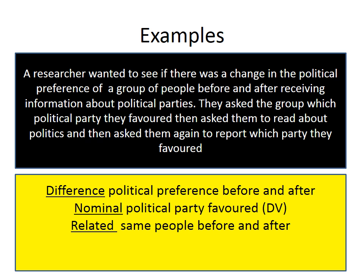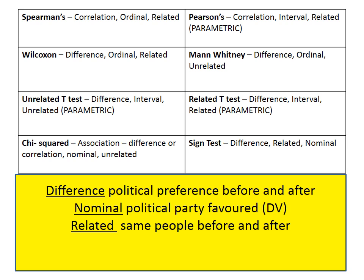Here's another example. The first question: is it difference or correlation? This is a study of difference, looking at the change in political preference before and after being given information. It's the same group of people before and after, so it's a related design — repeated measures. The DV in this case is nominal data, as it's the political party favoured, which is categorical data. Looking at the eight tests, the correct answer is the sign test — bottom right — a test of difference with a related sample and nominal level data.